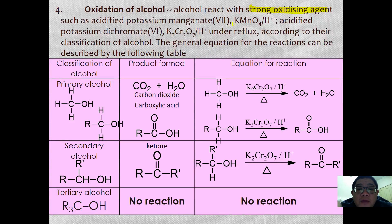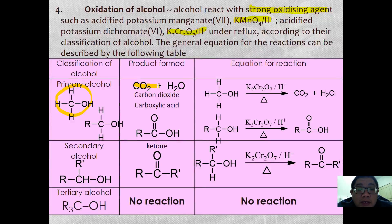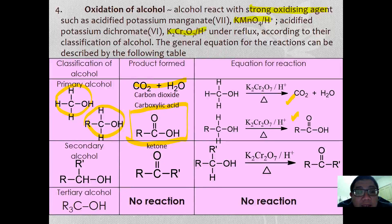The third reaction is the oxidation of alcohol. Alcohol reacts with a strong oxidizing agent such as acidified potassium manganate or acidified potassium dichromate under reflux. Methanol and other primary alcohols oxidize to become carboxylic acid, while secondary alcohols oxidize to form a ketone. However, a tertiary alcohol cannot be oxidized.